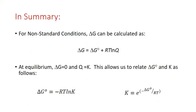In summary, for non-standard conditions, Gibbs free energy changes can be calculated as: delta G equals the standard Gibbs free energy change plus R times T times the natural log of Q, where Q is the reaction quotient. At equilibrium, delta G equals zero and Q equals K, which allows us to relate standard Gibbs free energy and the equilibrium constant K as: standard delta G equals negative R times T times the natural log of K. Alternatively, K equals e raised to the exponent of negative standard delta G divided by R divided by T.